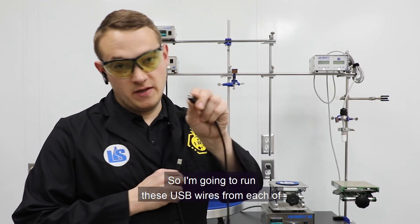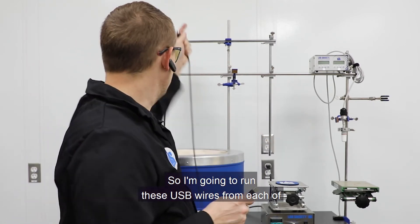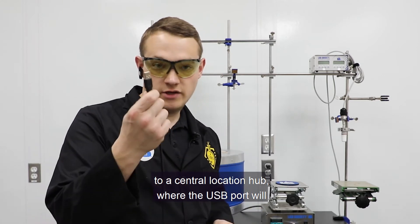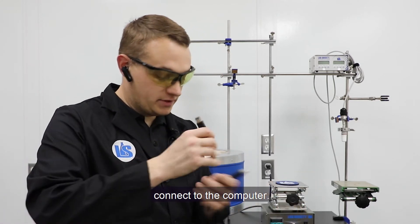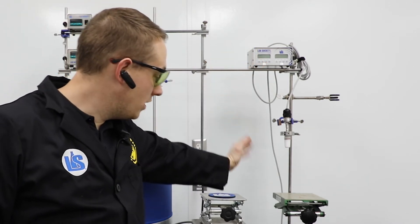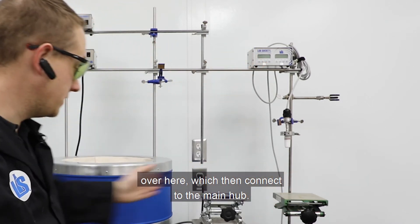But today I'm going to set it up as if I don't have an Elite Lab core kit because I'm using a more makeshift frame. So I'm going to run these USB-B wires from each of these controllers to a central location hub where the USB port will connect to the computer. And then for those, it's going to be mini USB that will go into their own hub over here, which then will connect to the main hub.